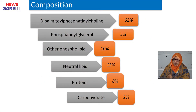The compositions of surfactant are: dipalmitoyl phosphatidylcholine at 62 percent, phosphatidylglycerol 5 percent, other phospholipids 10 percent, neutral lipid 13 percent, protein 8 percent, and carbohydrate 2 percent.